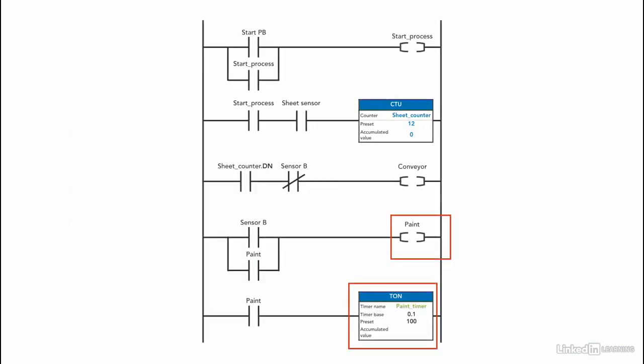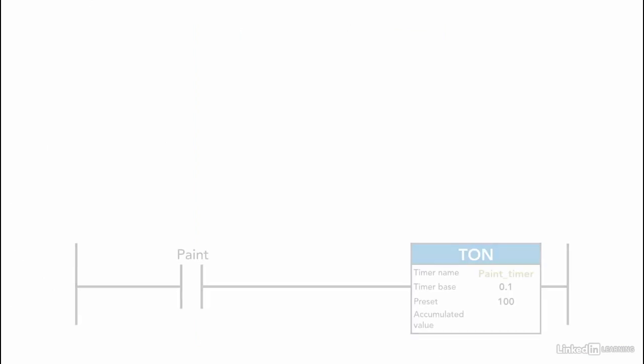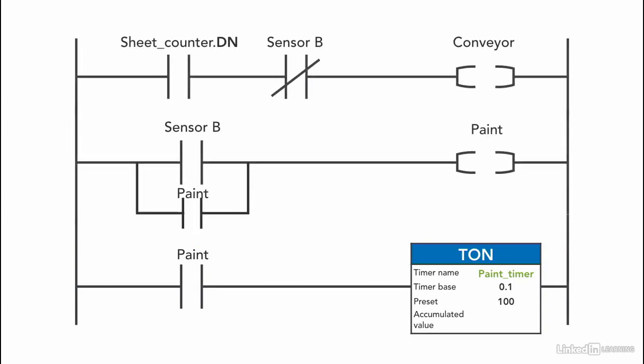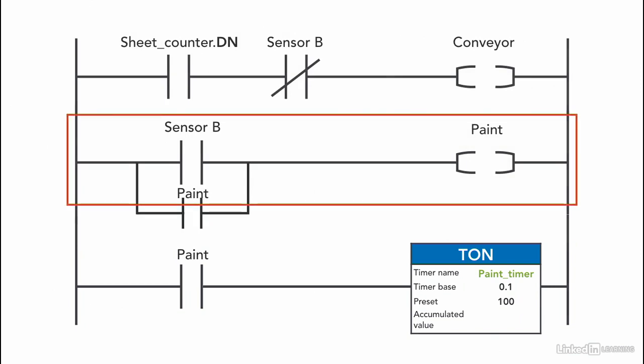We need to think about how to turn off the paint after the 10 second delay. First, we're going to use a timer done bit. The question is where to use it. Always try to think when you program. The done bit is used to turn off the paint, so I'm going to use it in this rung.